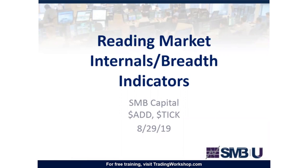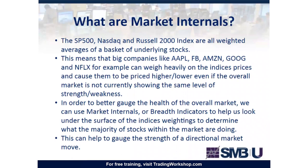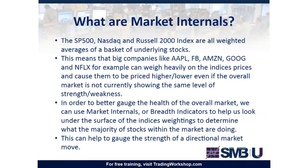We're going to talk about reading market internals and breadth indicators — for the sake of this example, they're basically the same thing. The S&P 500, the NASDAQ, and the Russell are all weighted averages of a basket of underlying stocks. Big companies like the FANGs — Apple, Facebook, Amazon, Google — can weigh heavily on the index's price, even if the overall market isn't showing the same level of strength or weakness. We can use market internals to look under the surface and see whether the indices' weightings are overweight or underweight compared to what the majority of stocks are doing.